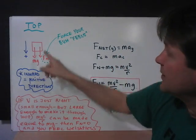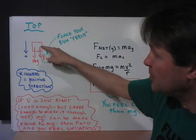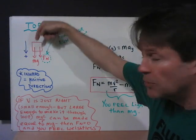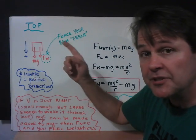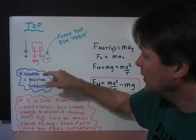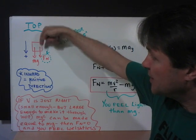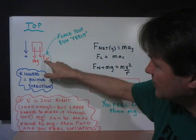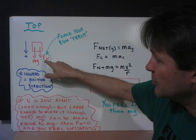Now, let's look at the top of the loop. At the top of the loop, you're hanging upside down. Weight is still pulling you downward, and your seat, the seat of the roller coaster, is pointed downwards. Your bum is up in the air, so that's the force that you're going to be feeling on your body. Those two forces are pointing towards the center.